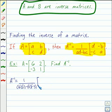And we're going to multiply that fraction by this new matrix where we switch around A and D. So we're going to switch 6 and 1. And we make B and C opposite. So we'll have negative 2 and positive 3.